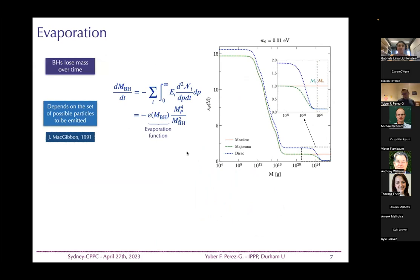Since black holes emit particles, by energy conservation they lose mass over time. We can compute the mass loss rate by integrating the energy emitted per particle, re-parameterizing using the Hawking spectrum in the so-called evaporation function, first introduced by MacGibbon in the 1990s.